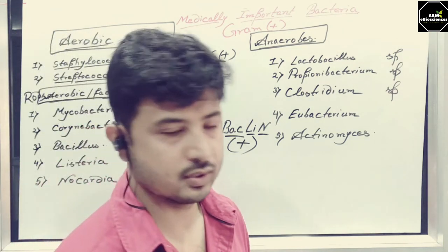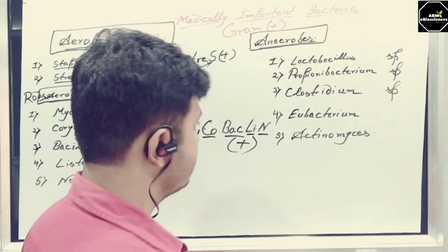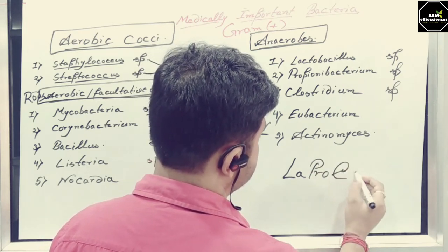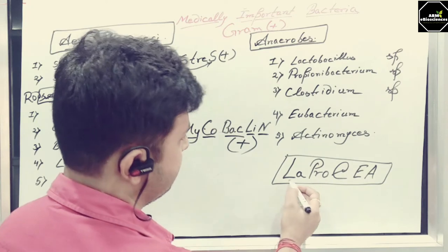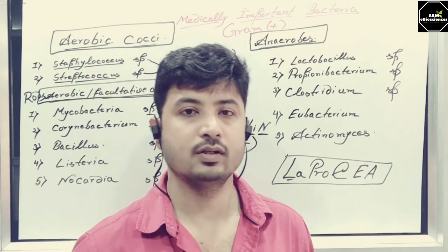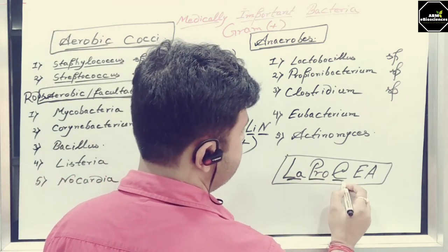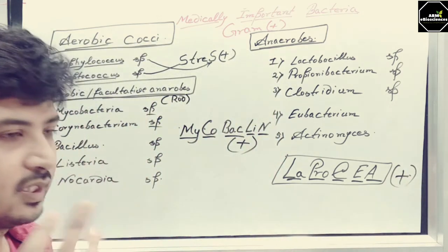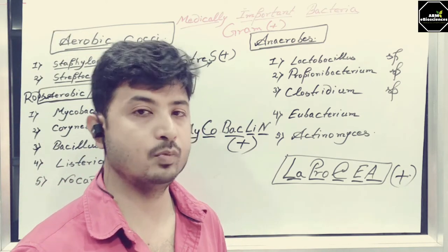Next are the gram-positive anaerobes. Here you can see Lactobacillus, Propionibacterium, Clostridium, Eubacterium, and Actinomyces. The chosen word to remember this group is 'Leprosia.' Leprosia is not a disease condition or symptom, but you can memorize it like one — it will be easy to remember. So Leprosia Positive covers all these bacteria. In summary: Stress Positive, Mycobacterium Positive, and Leprosia Positive cover all the medically important gram-positive bacteria.